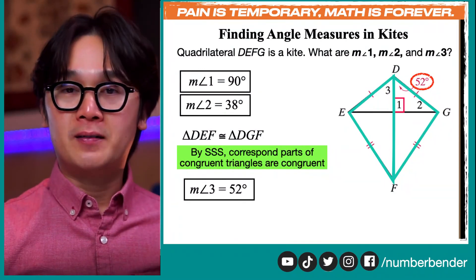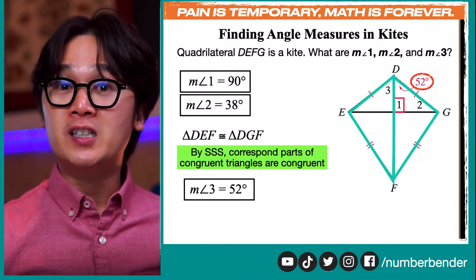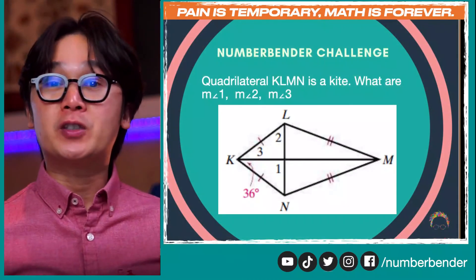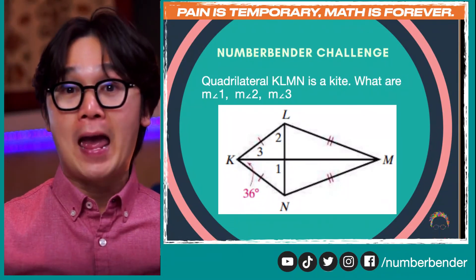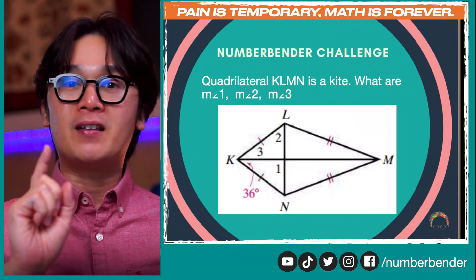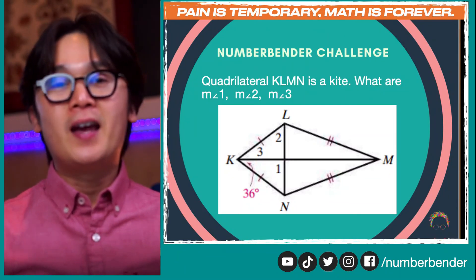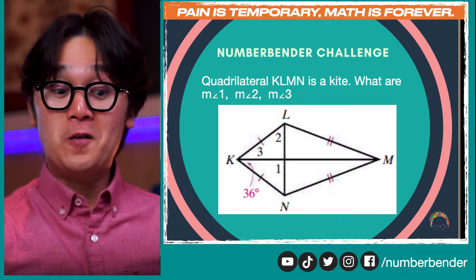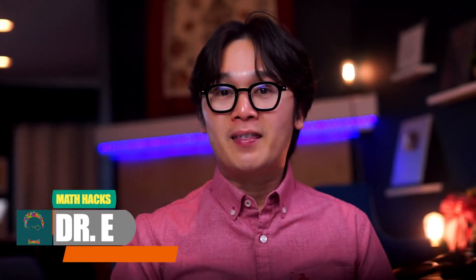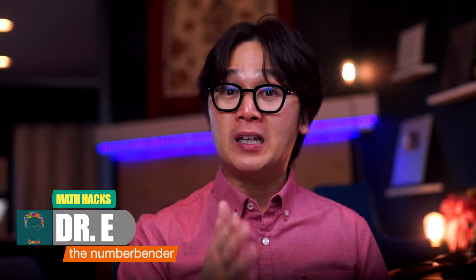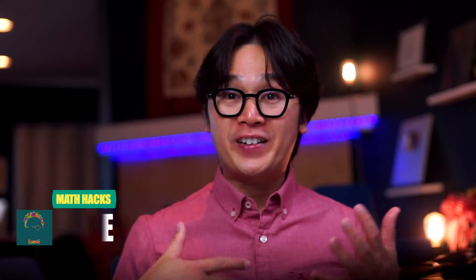This is how we use the theorems of a kite to find the missing parts of this special quadrilateral. For our number bender challenge today, you have kite KLMN. Given the information in this problem, comment down below the measurement of angle one, angle two, and angle three. This is our lesson on kites — we've worked on the theorems associated with the kite and combined them with our knowledge of triangles. This is Dr. E; see you again next time. Bye!